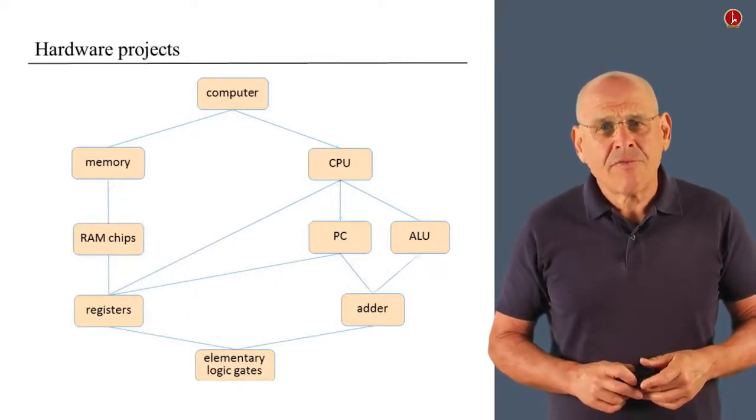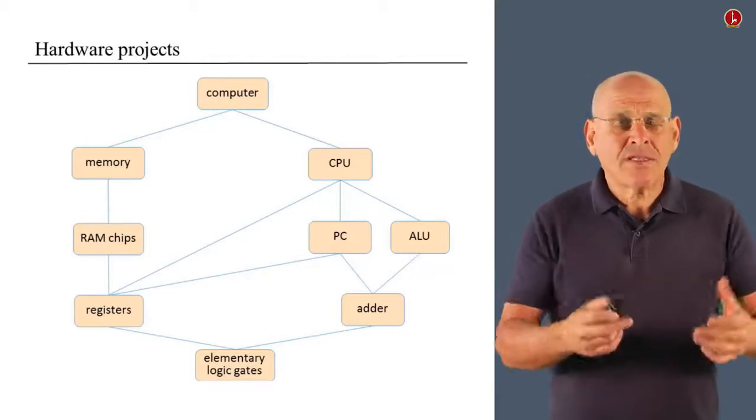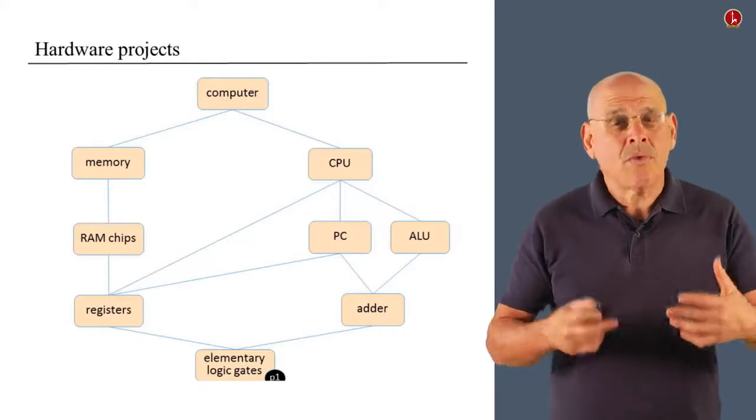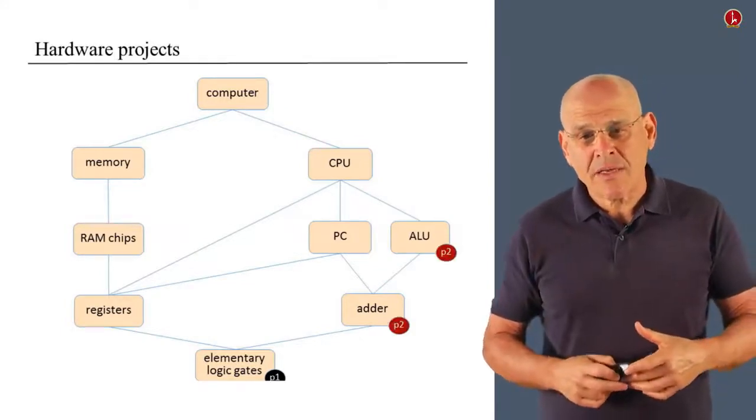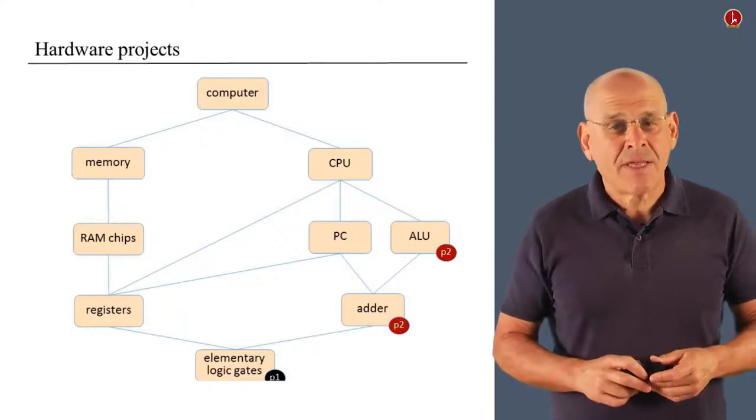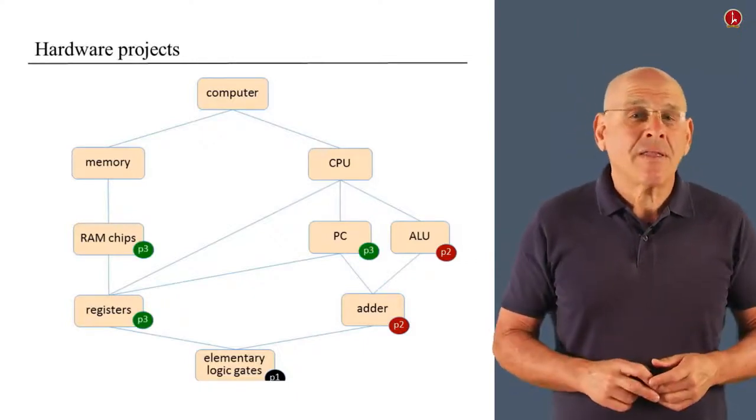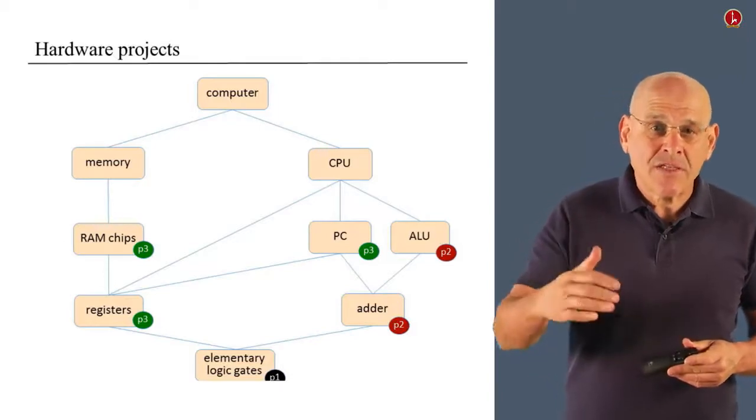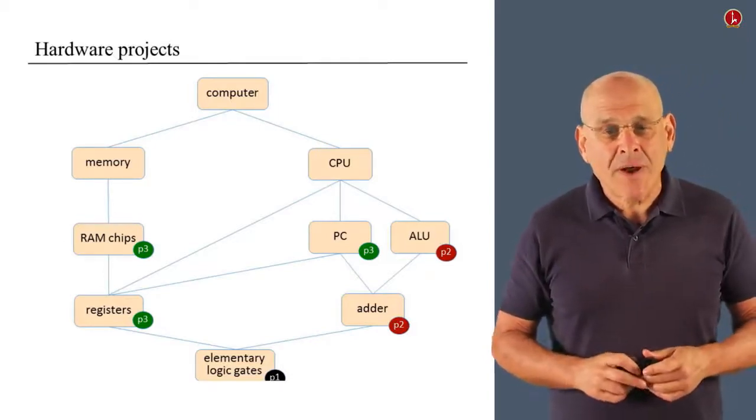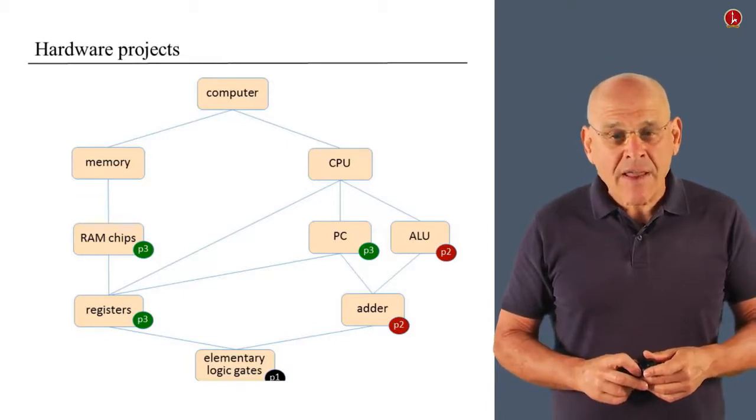Now, if we look at what I've just described bottom up. Then in project one, we built the elementary logic gates. In project two, we built a family of adders that led up to the ALU. In project three, we built a family of registers that ended up with RAM units.